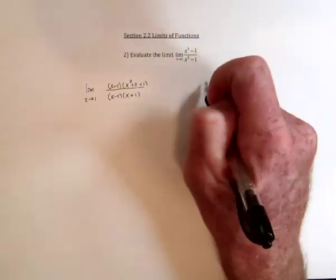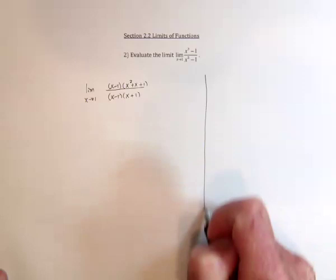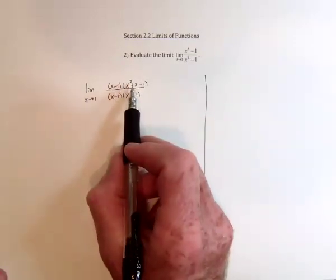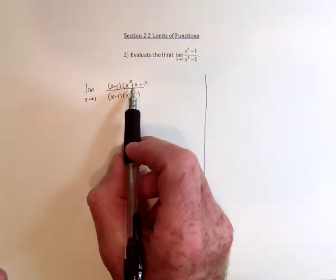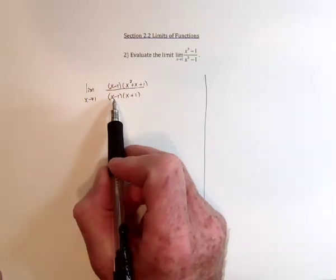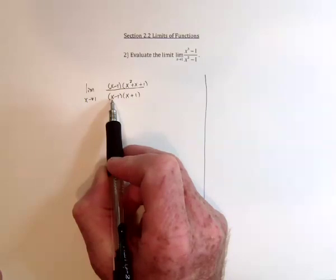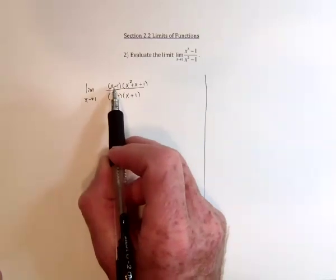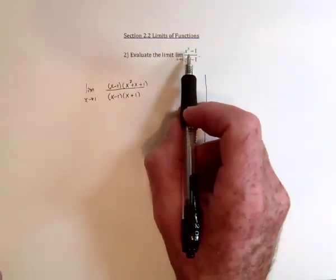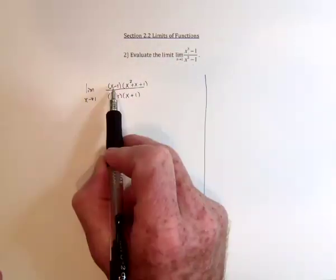But back to this idea. What if you didn't remember how to factor that? One other possibility is you could look at this and say, it's x minus 1 that's really causing the trouble. And the only way I'm going to get it to cancel is if there's an x minus 1 that gets factored out of the top.